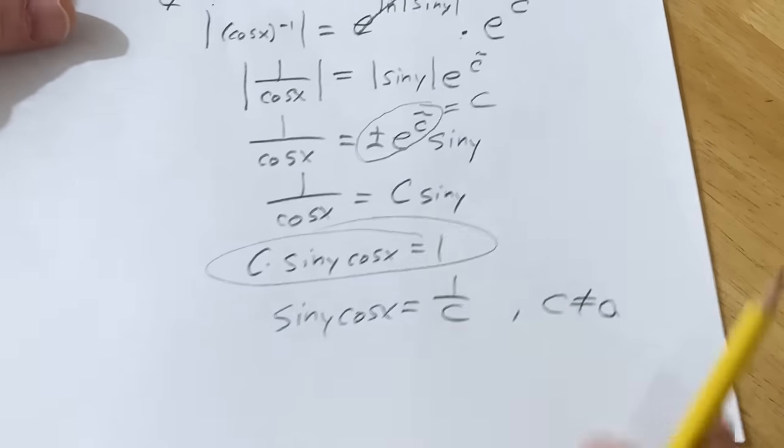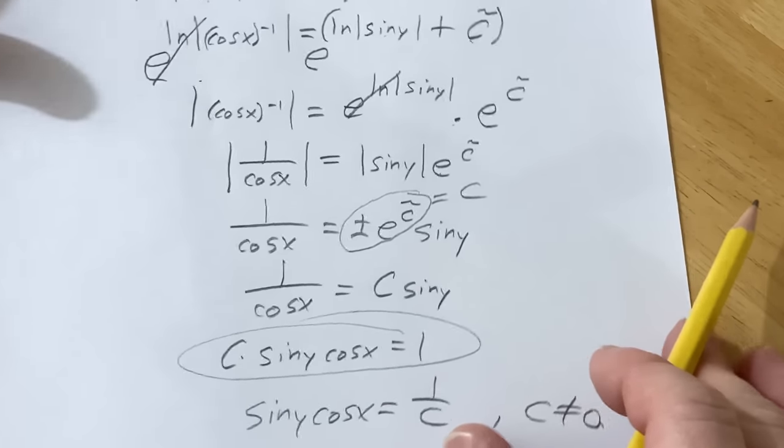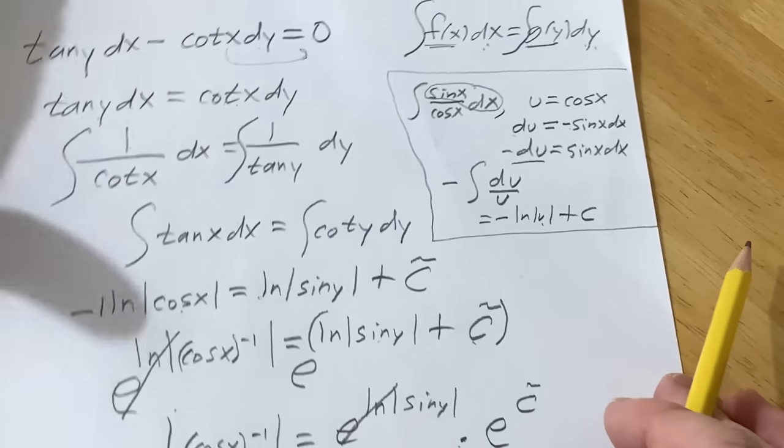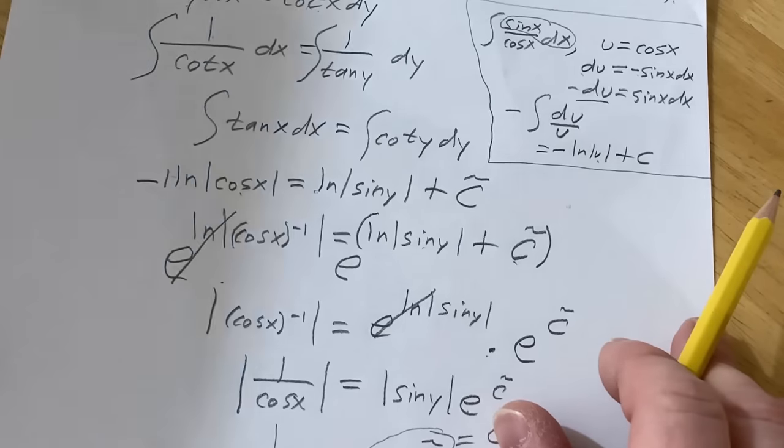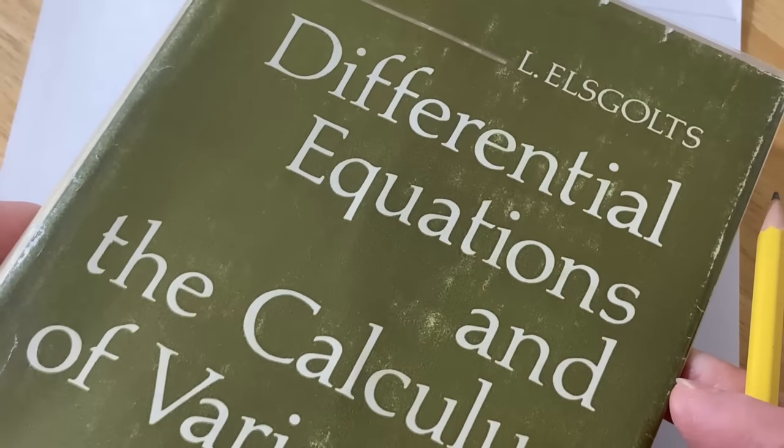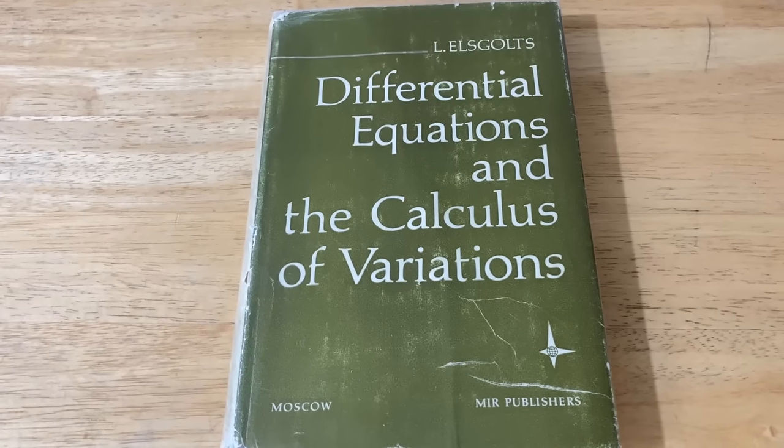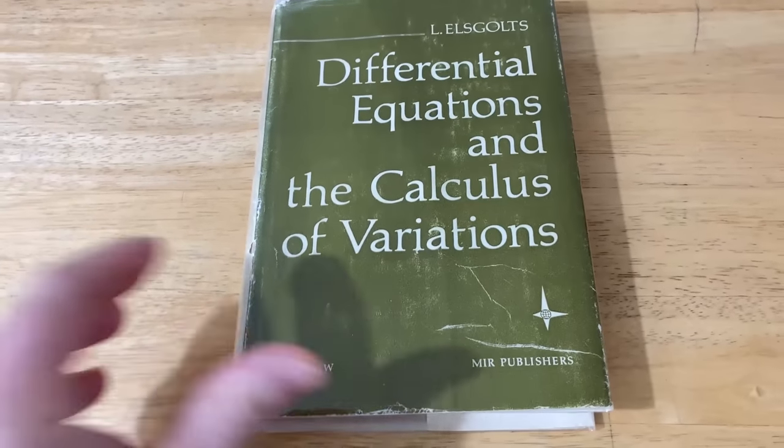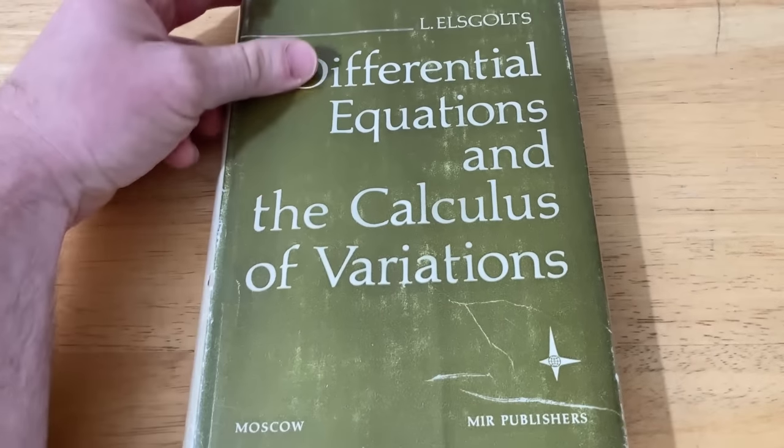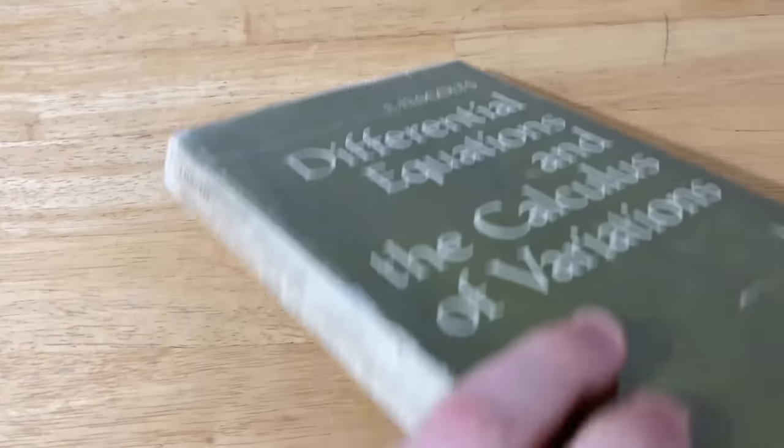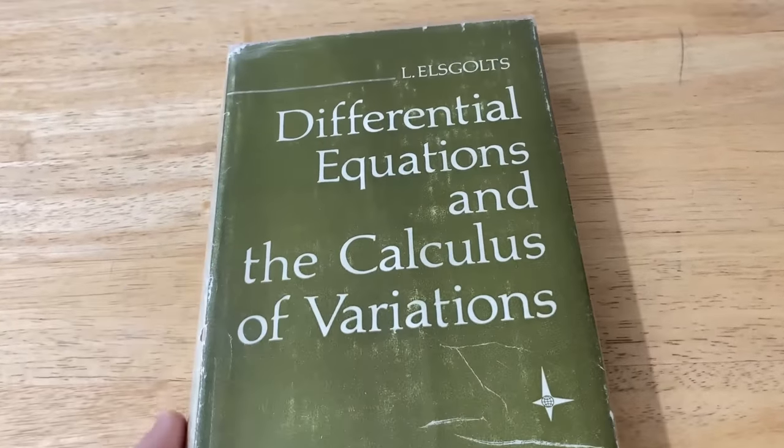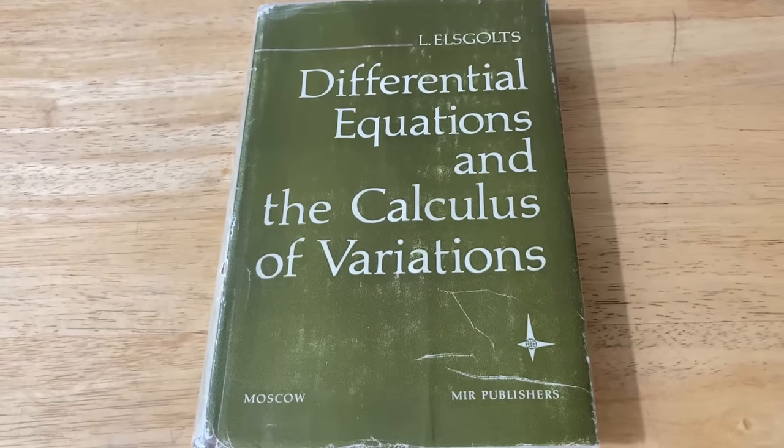So kind of a simple problem, but this is the very first exercise, number 1 in this book here by Elsgolts, Differential Equations and the Calculus of Variations. So that's it, I just wanted to show you this book. Again, it's called Differential Equations and the Calculus of Variations. And if I can find a copy, I will try to leave a link in the description. It's pretty cool to look at old books like this. Good luck.